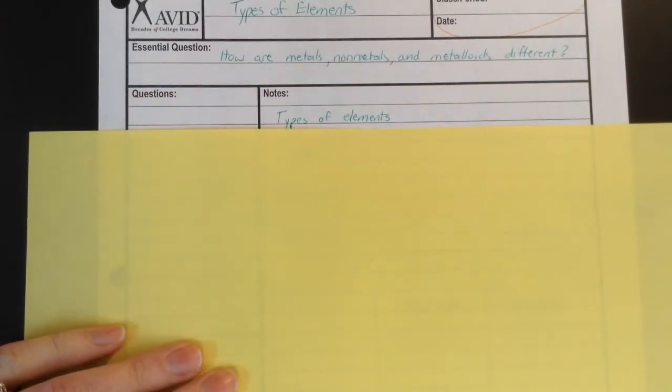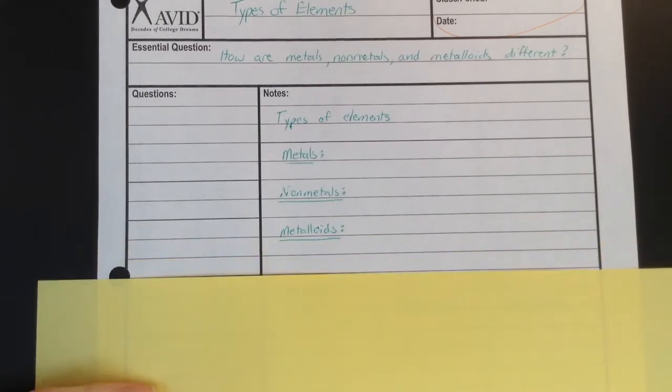Okay, so types of elements. There's three: metals, nonmetals, and metalloids.